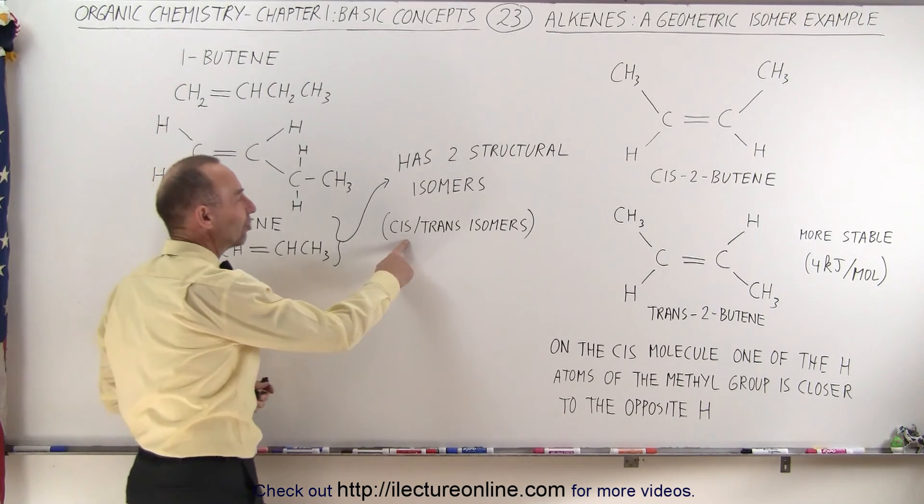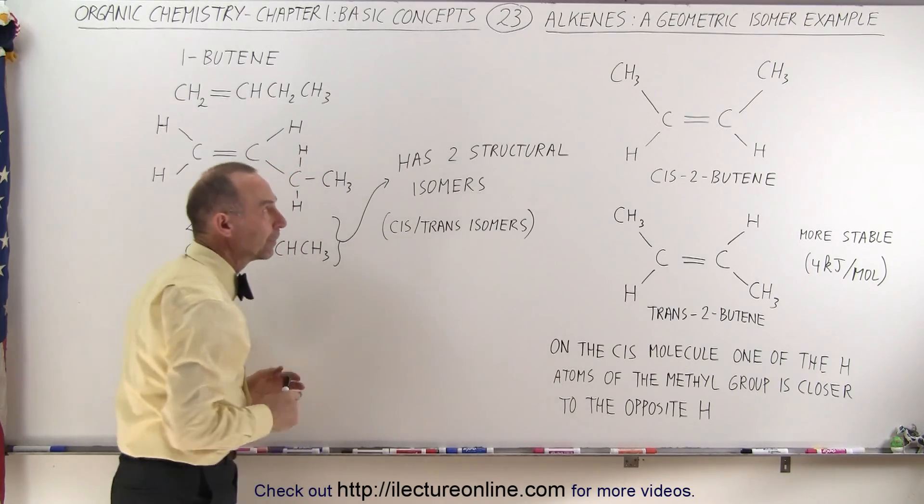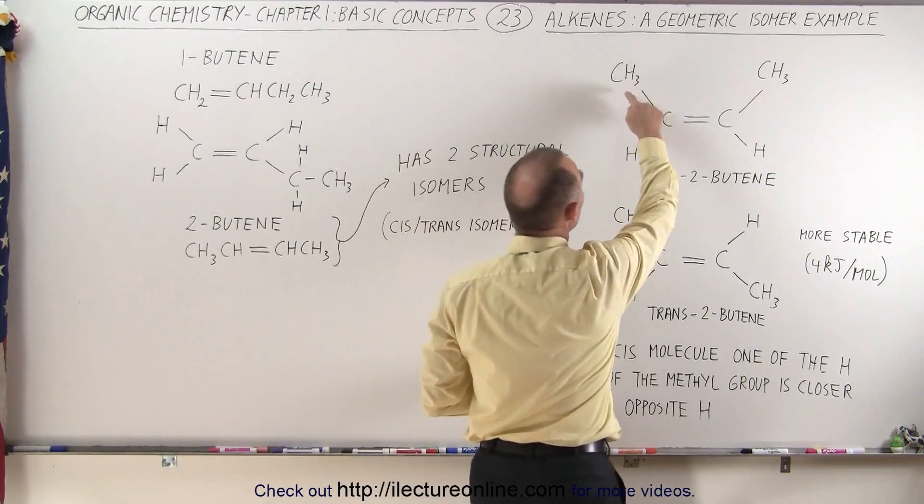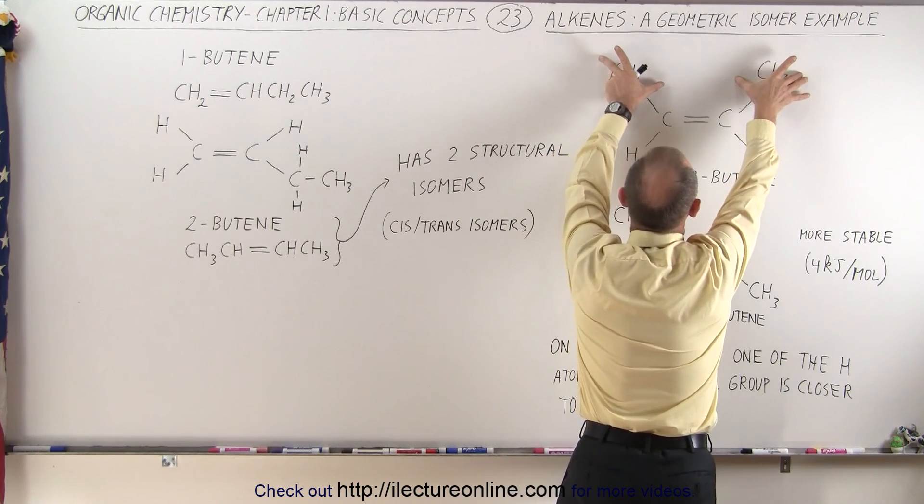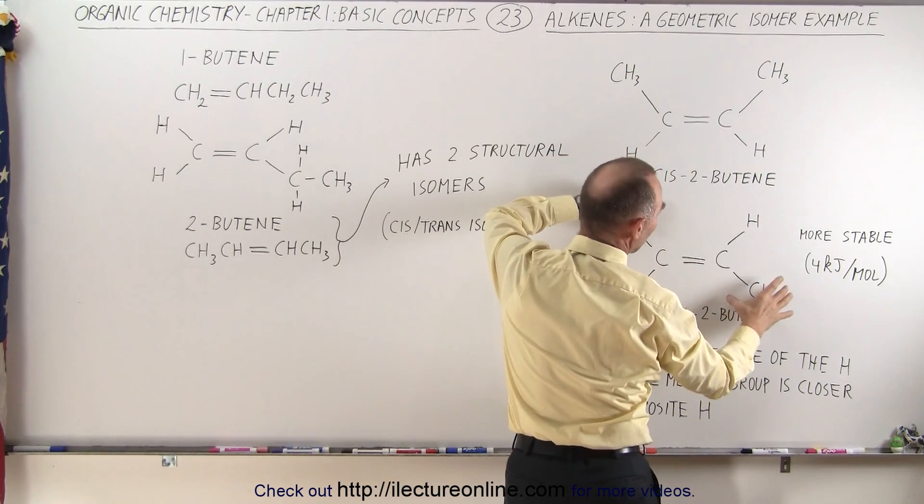We also call that the cis-trans isomer pair because in one case we have the two methyls on one side of the molecule, in the other case we have them on opposite sides.